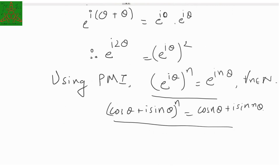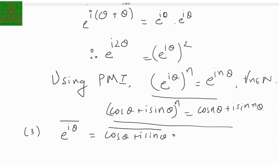This identity is also known as De Moivre's theorem, which says that (cos θ + i sine θ) raised to n equals cos nθ plus i sine nθ. The proof of this identity we'll see in the next video, which is about De Moivre's theorem and its applications. We'll see the proof of this result and also applications to find out certain things.